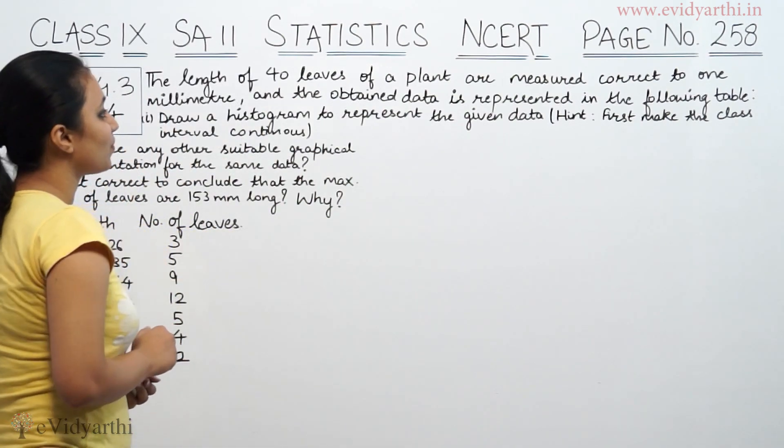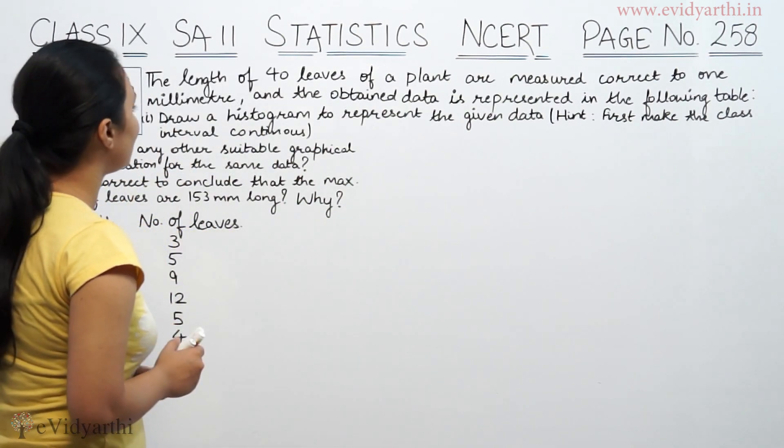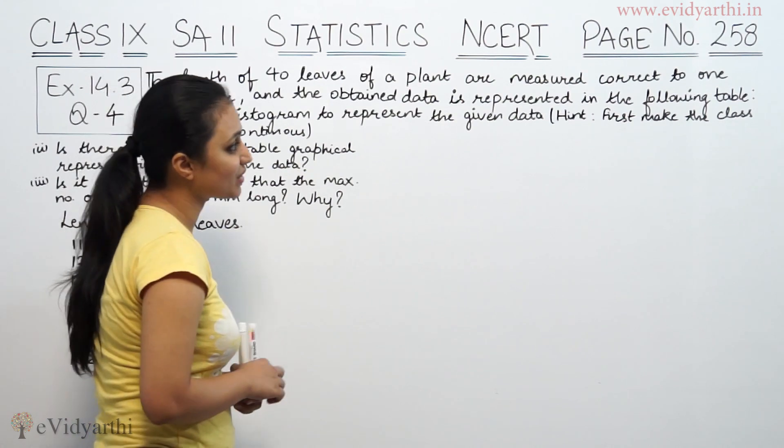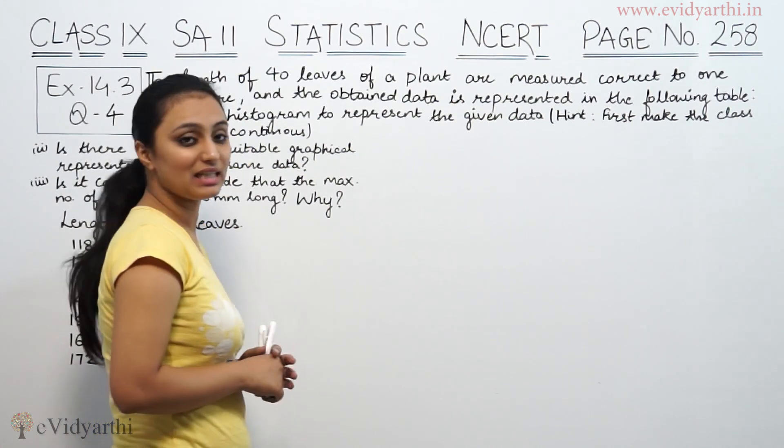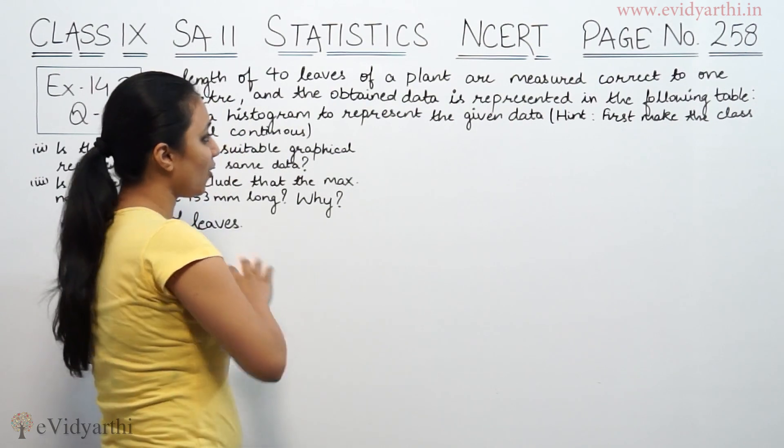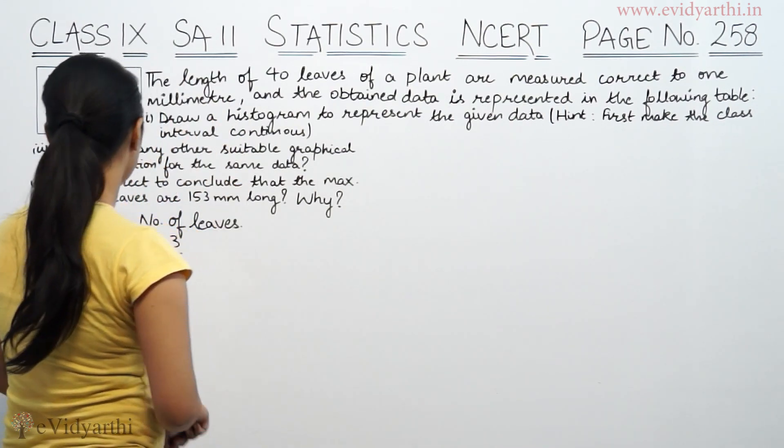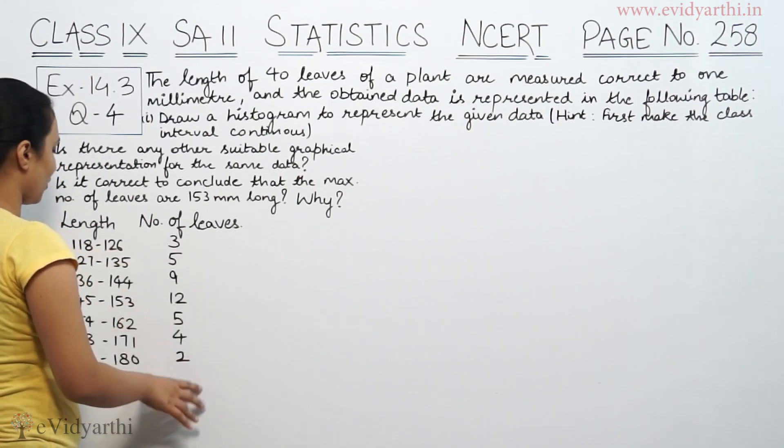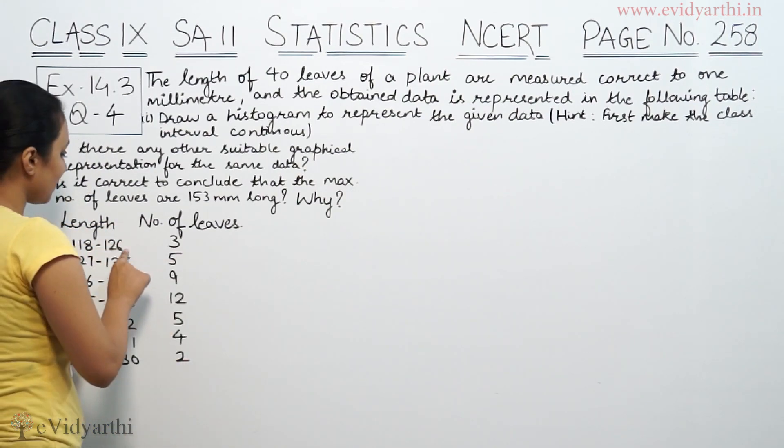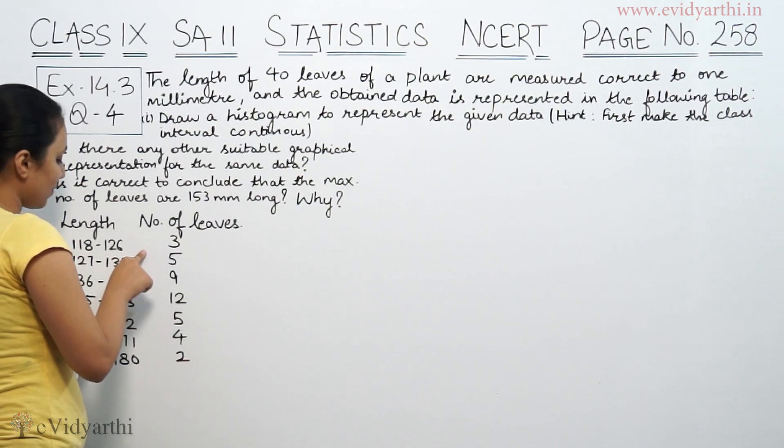The length of 40 leaves of a plant are measured correct to one millimeter, and the obtained data is represented in the following table. For the leaves, one of the leaves is measured and revised. First, we make the class interval. The class interval is length of leaves and number of leaves. We need to convert this to true class limits.